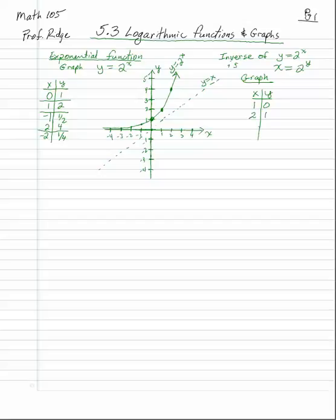Try one more with the change of base formula, using both the LOG and LN buttons — you'll see you get the same answer. For log base 12 of 138: since 12 squared is 144, the answer should be a little less than 2. Using LN: LN(138) divided by LN(12) gives approximately 1.9829.